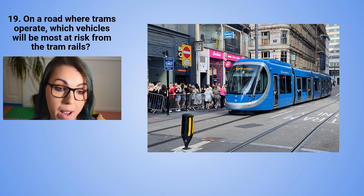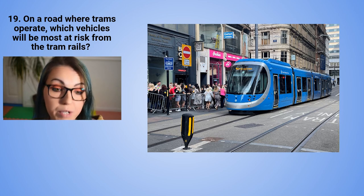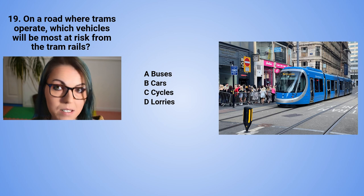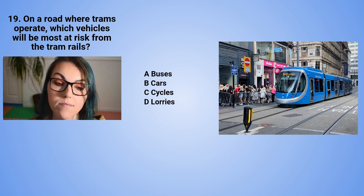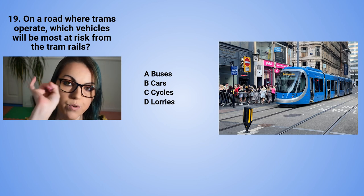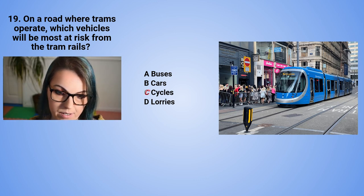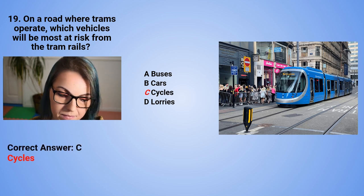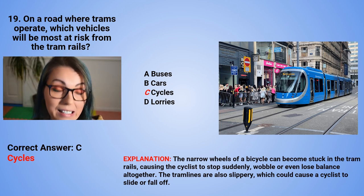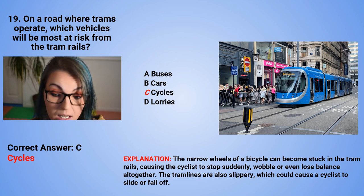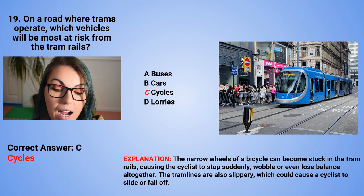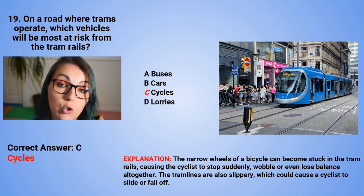Question 19: On a road where trams operate, which vehicles will be most at risk from the tram rails? A. Buses. B. Cars. C. Cycles. Or D. Lorries. The correct answer is C — cycles. The narrow wheels of a bicycle can become stuck in the tram rails, causing the cyclist to stop suddenly, wobble, or lose balance altogether. The tram lines are also slippery, which could cause a cyclist to slide or fall off.